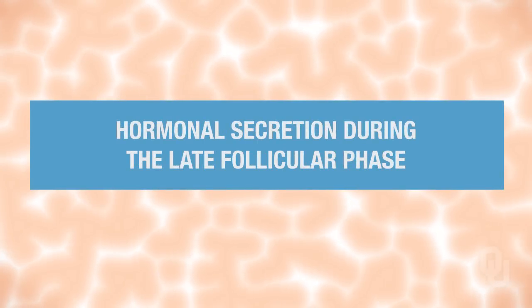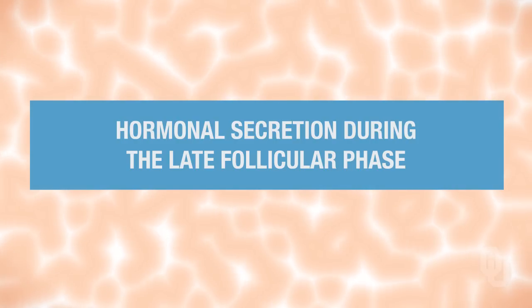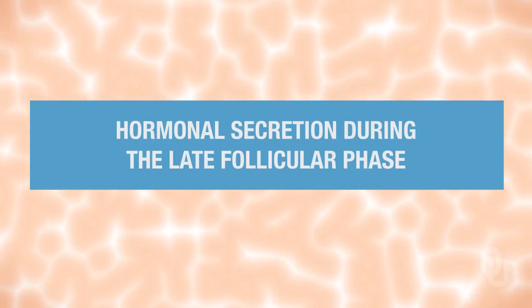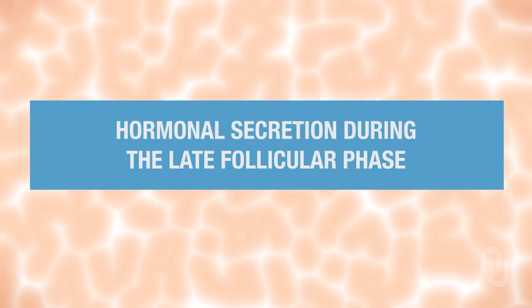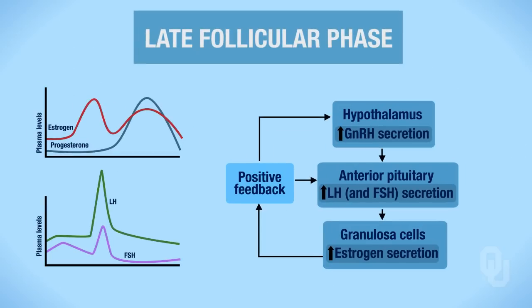The last lecture video discussed regulation of hormone secretion, particularly the mid-follicular phase. This video will focus on regulation of hormone secretion in the late follicular phase—basically the late antral phase. If you recall from the last video, we had an increase in estrogen levels, labeled C to coincide with the previous diagram. What was causing that estrogen secretion was LH, which caused estrogen levels to go up, labeled C on the graph.